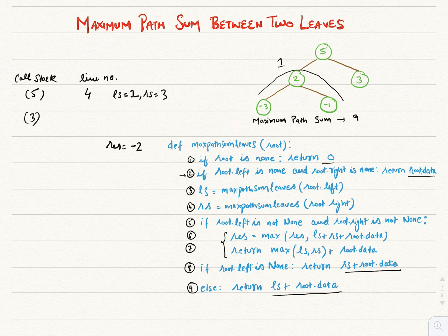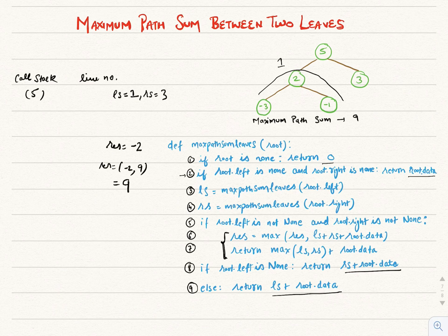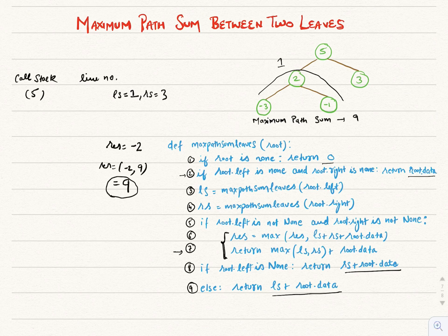rs gets the value 3. Since root 5's left and right are both not None, it follows the condition: result = max(-2, ls + rs + root data) = max(-2, 1 + 3 + 5) = 9. So result stores 9 and the execution ends. The result holds the maximum path sum in the end. That's how we find the maximum path sum between two leaves in a binary tree, and this algorithm runs in linear time.